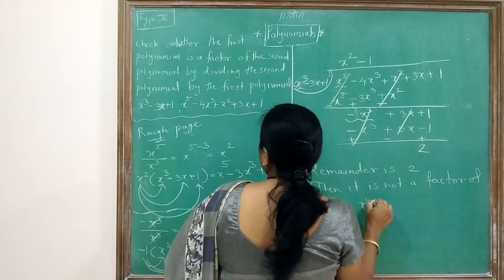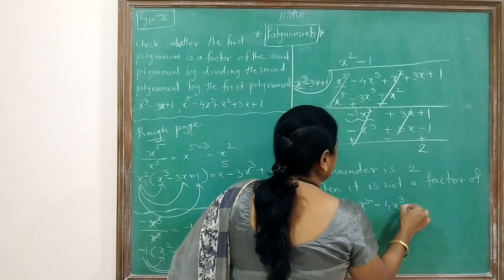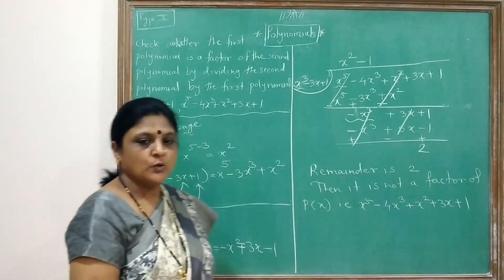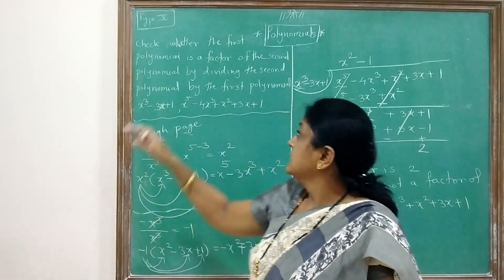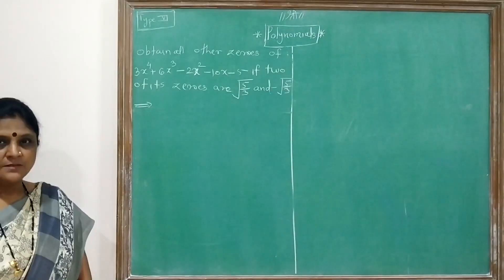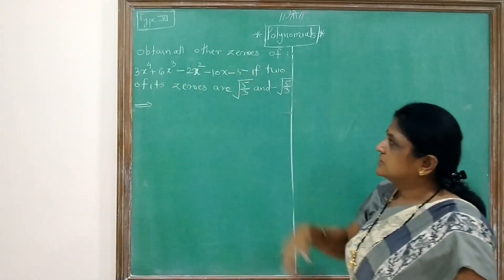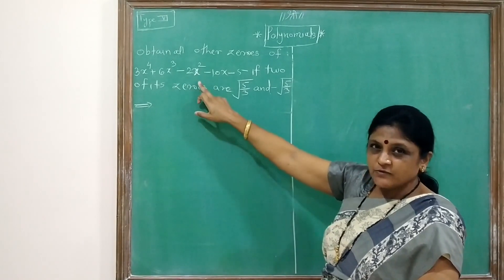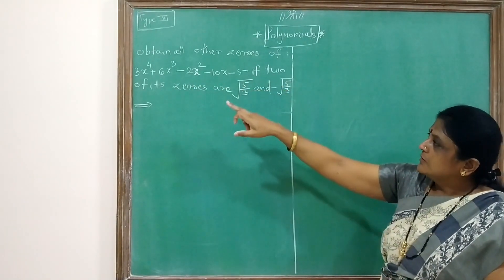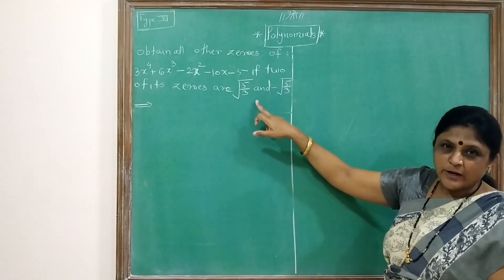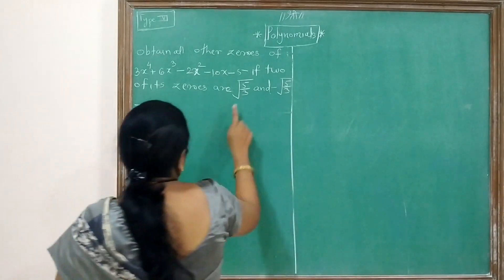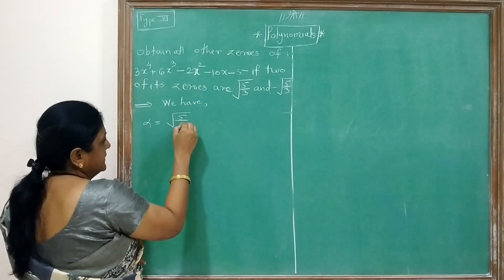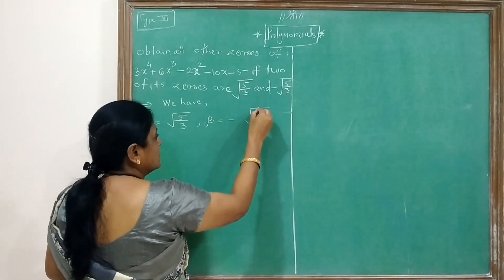That is, x⁵ - 4x³ + x² + 3x + 1 is not a factor. Now let's get started with Type 6: obtain all the zeros of 3x⁴ + 6x³ - 2x² - 10x - 5, given that two of its zeros are √(5/3) and -√(5/3). We have alpha = √(5/3) and beta = -√(5/3).